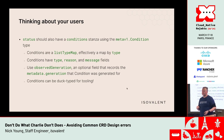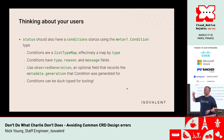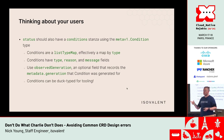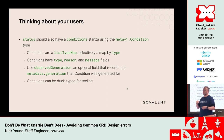One important optional field you should use is observed generation. This takes the auto-incrementing metadata.generation field from every Kubernetes object. When you set observed generation inside a condition, it says this condition is relevant for generation X of this object — effectively a staleness check. If the metadata generation and observed generation don't match, the controller is broken or hasn't reconciled that object yet.